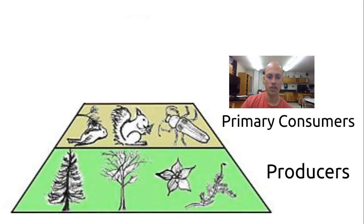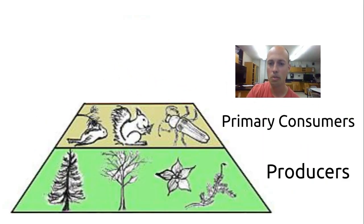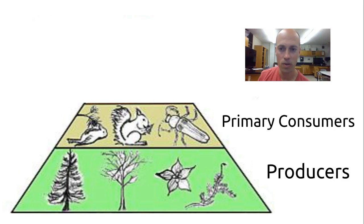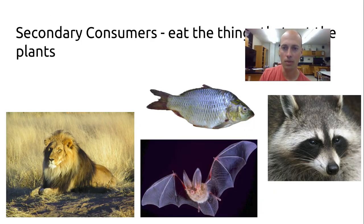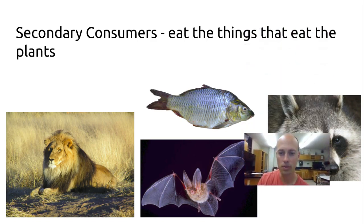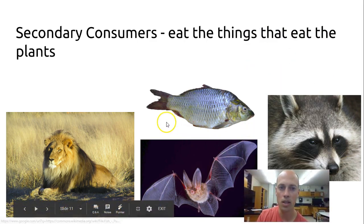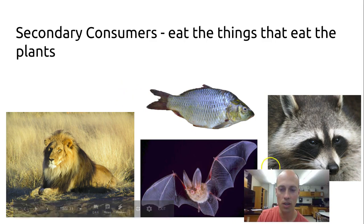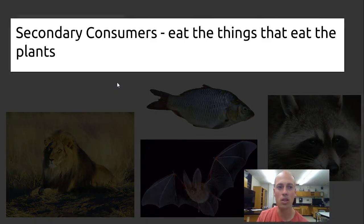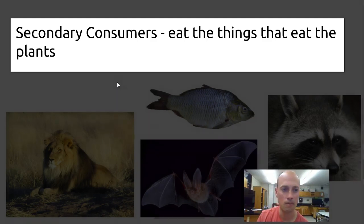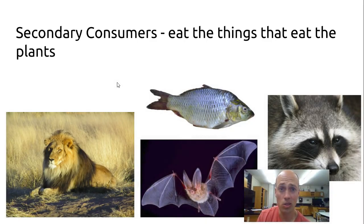As we move on, so here's the primary consumers, the herbivores, the ones that eat the plants. The next level, there's less energy available for, so there will be fewer of these in any ecosystem. There's just not as much energy left, yet these animals thrive very well when there is enough primary consumer around. Secondary consumers eat the things that eat the plants. They eat the primary consumers.